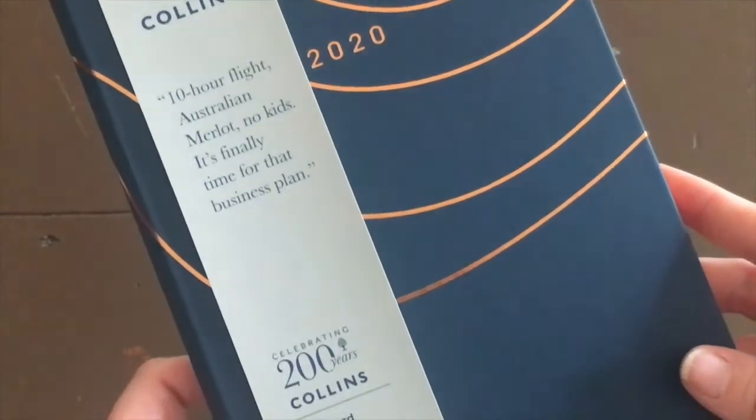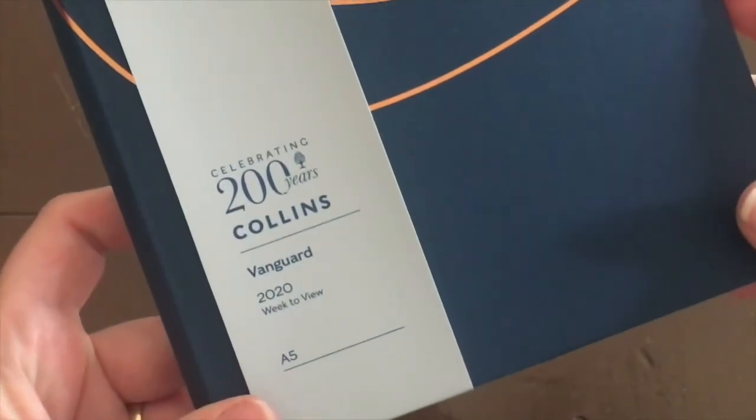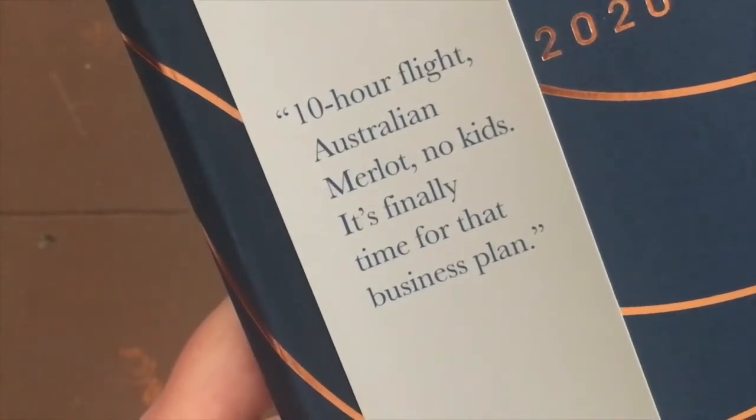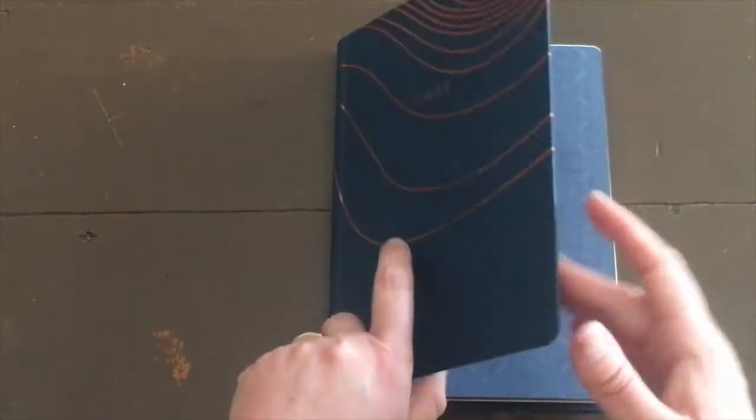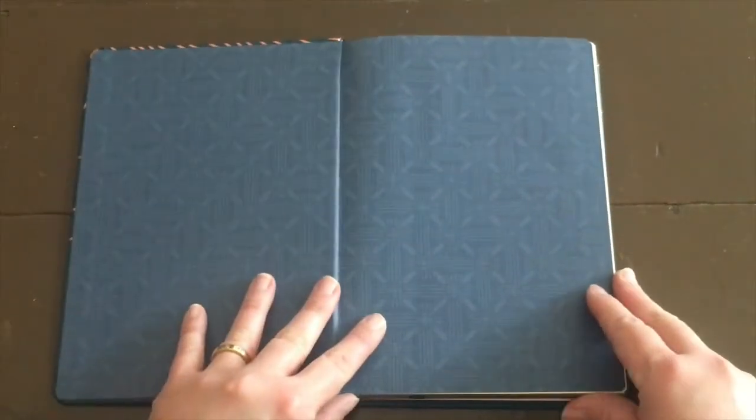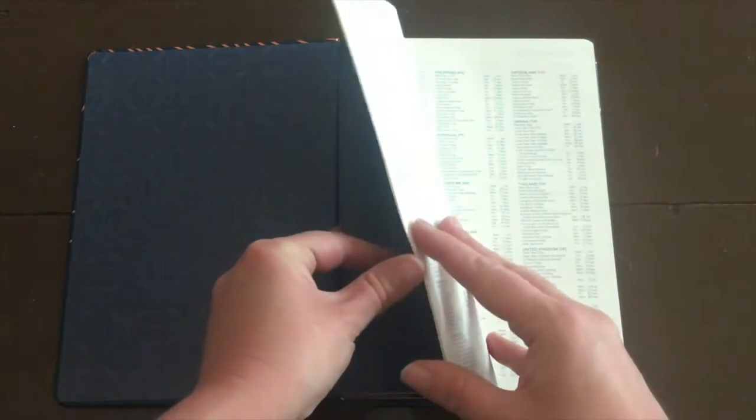The Vanguard 2020 is adorable. It's a little bit bigger and it has the cutest phrase on the front: 10 hour flight, Australian Merlot, no kids, finally time for the business plan. Let's take a look inside of this one. Beautiful inside cover.